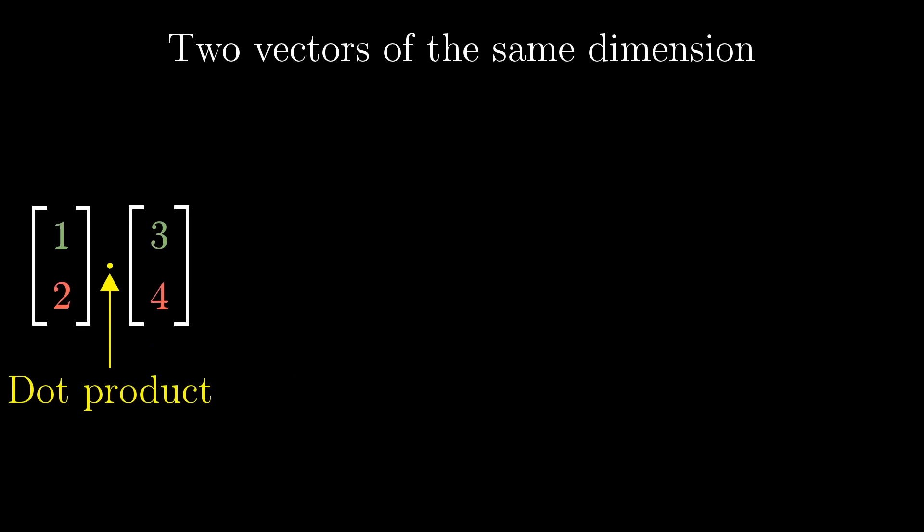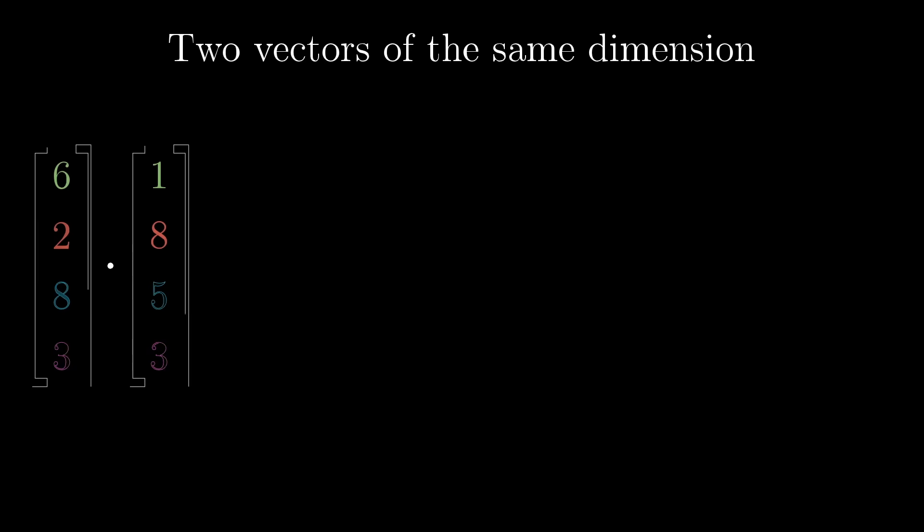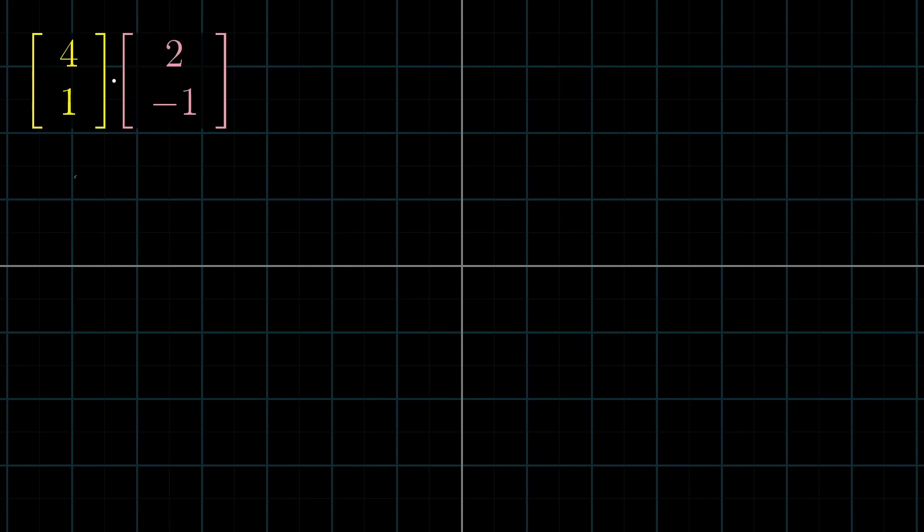So the vector 1, 2 dotted with 3, 4 would be 1 times 3 plus 2 times 4. The vector 6, 2, 8, 3 dotted with 1, 8, 5, 3 would be 6 times 1 plus 2 times 8 plus 8 times 5 plus 3 times 3. Luckily, this computation has a really nice geometric interpretation.